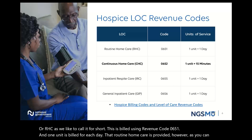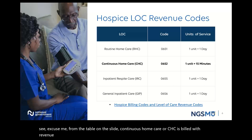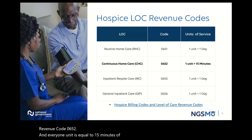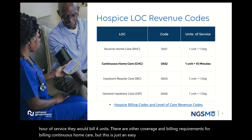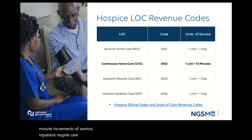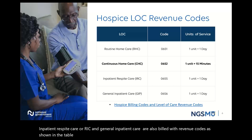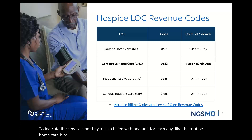If we look at, let's say, routine home care or RHC, this is billed using revenue code 0651, and one unit is billed for each day that routine home care is provided. However, as you can see from the table on the slide, continuous home care or CHC is billed with revenue code 0652. Every one unit is equal to 15 minutes of service, meaning if the hospice provided one hour of service, they would bill four units. There are other coverage and billing requirements for billing continuous home care, but this is just an easy example of how to bill units for 15-minute increments. Inpatient respite care or RIC and general inpatient care GIP are also billed with revenue codes as shown in the table, with one unit for each day when the service is rendered.